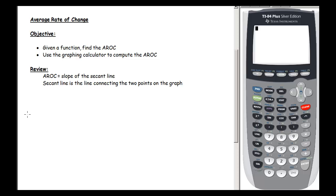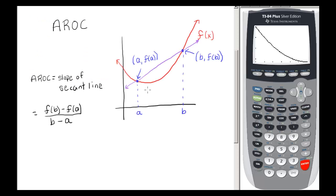Remember, the average rate of change is the slope of the secant line. If we have a function f of x and we're trying to find the average rate of change over an interval a to b, we're trying to find the slope of this purple secant line. At b, the y value is f(b), and at a it's f(a). So the average rate of change is f(b) minus f(a) over b minus a.